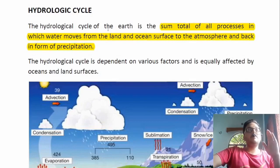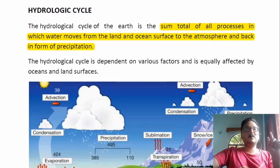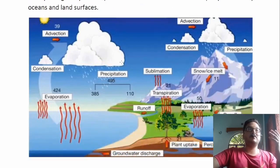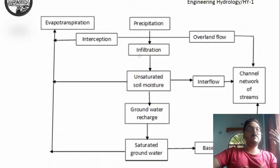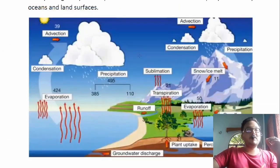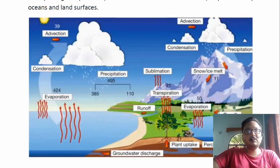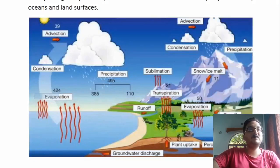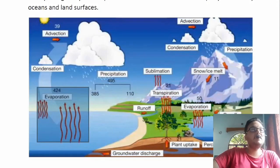The sum total of all processes in which water moves from land and ocean surface to the atmosphere and back in the form of precipitation is our hydrological cycle. The hydrological cycle is dependent on various factors and is equally affected by oceans and land surfaces. Looking at the basic diagram, some source will be there where evaporation takes place — a larger amount of evaporation occurs in the ocean because more surface water is present there.